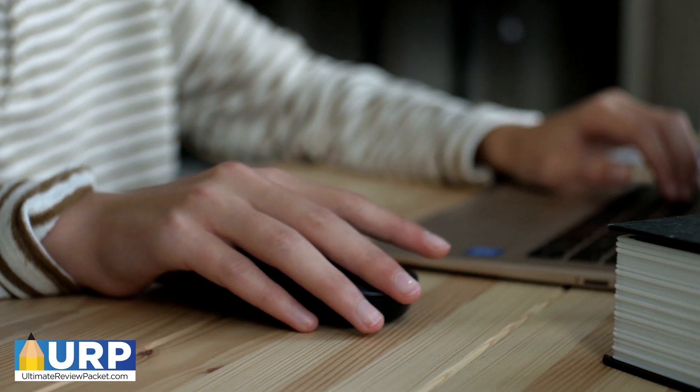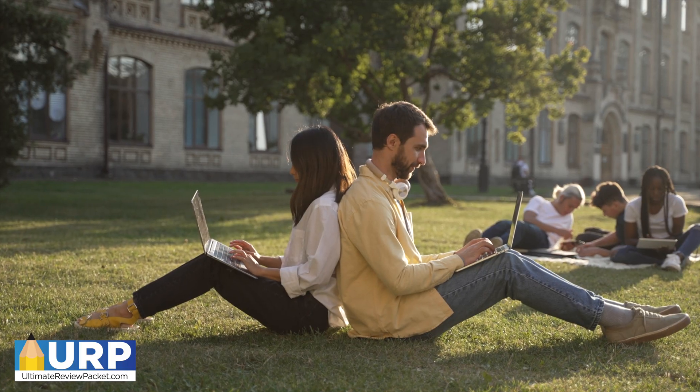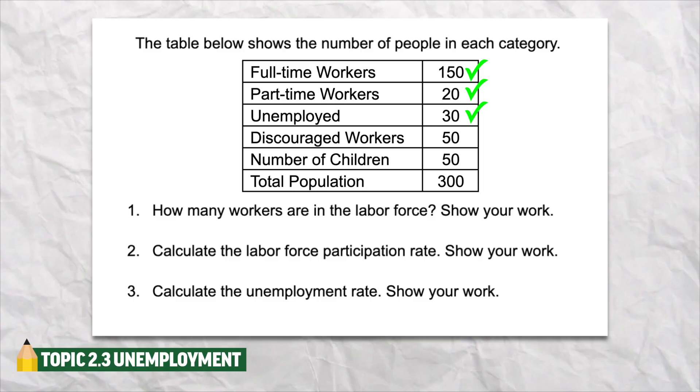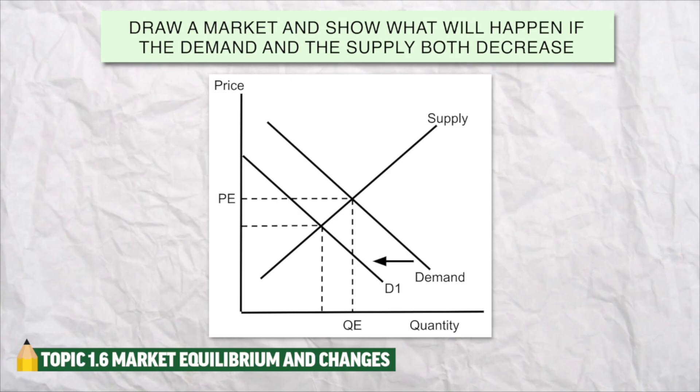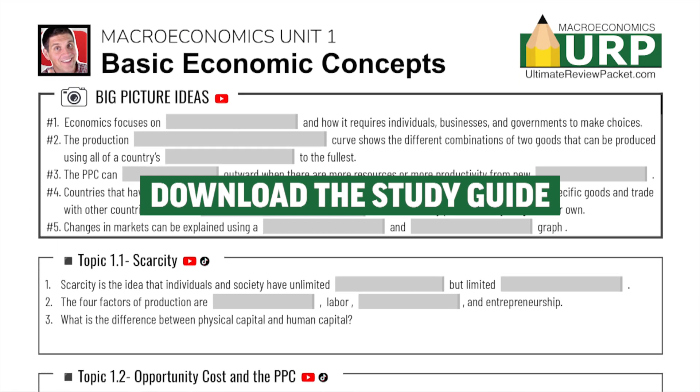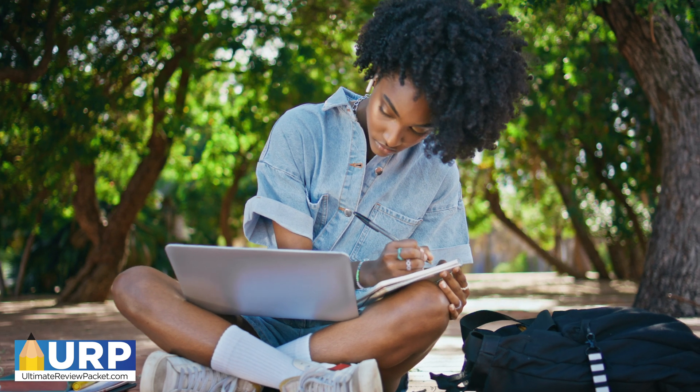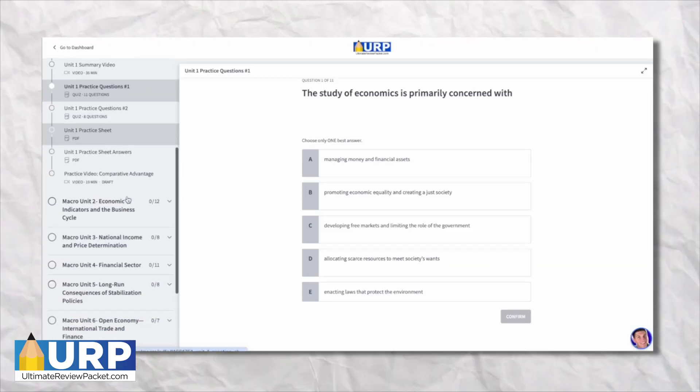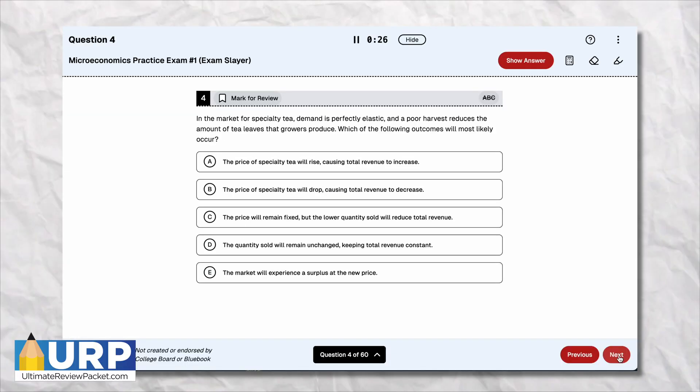This resource is designed to help you review and practice everything you need to know about AP or introductory macroeconomics and microeconomics. We're talking about unit summary videos, study guides, practice sheets, and walkthrough videos where I explain everything. It also includes practice questions and full-length practice exams.